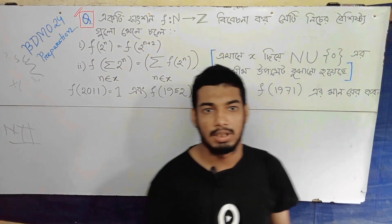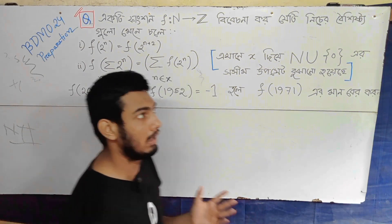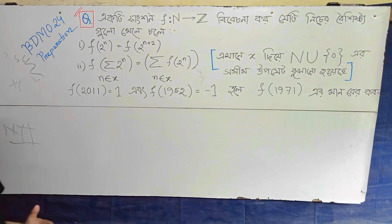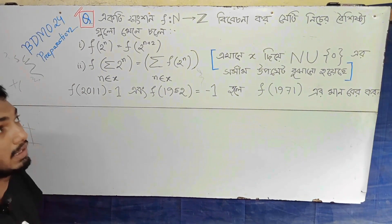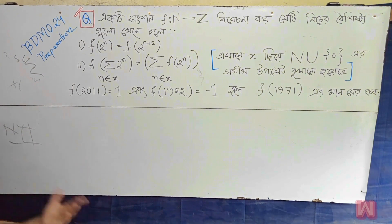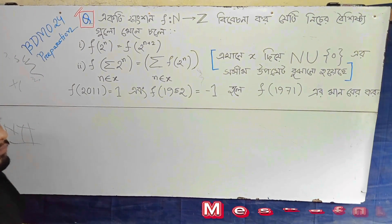So, let me show you. At a function f is from N to Z. The function has the following conditions given below.